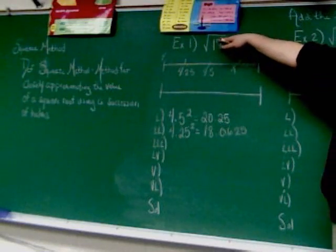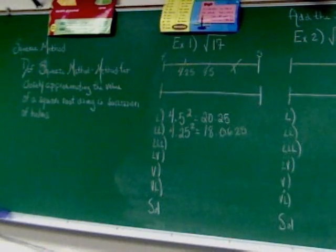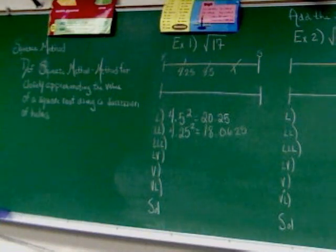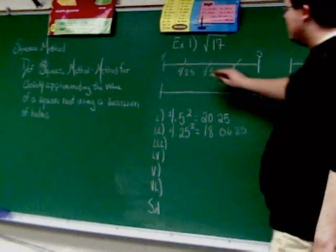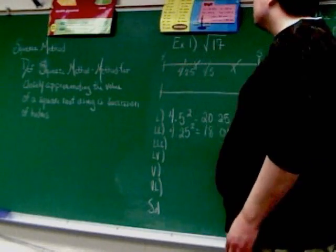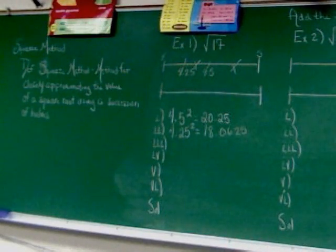Now when I take 4.25 and square it, I get 18.0625. Now remember, my goal is to get to 17, or as close to it as I can get. 18.0625 is still too big. So I've got to take out everything bigger. Because again, nothing bigger is ever going to get any closer. So I'm going to get rid of everything bigger than this, and I cross out that.